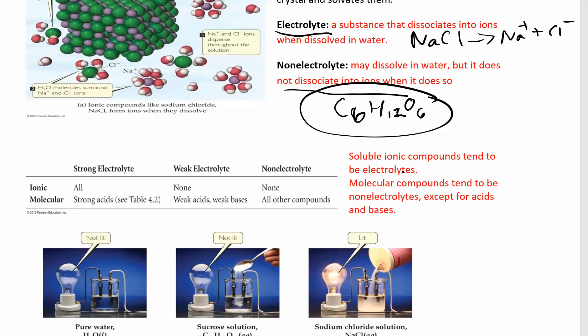Soluble ionic compounds tend to be electrolytes. Molecular compounds tend to be non-electrolytes unless you have acids and bases. You can have strong acids, weak acids, strong bases, weak bases, and weak electrolytes. Strong electrolytes: any ionic compound, if it's a soluble ionic compound, that's going to be a strong electrolyte. If you have a strong acid, that's a strong electrolyte. All strong bases are soluble ionic compounds, so they're strong electrolytes anyway.